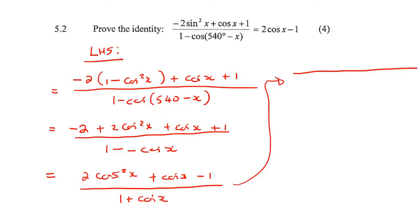To factorize that trinomial, we'll have two brackets: it'll end up being (2cos x - 1)(cos x + 1). At the bottom, we have 1 + cos x. These two are the same.